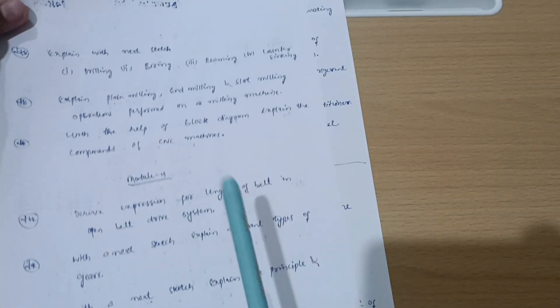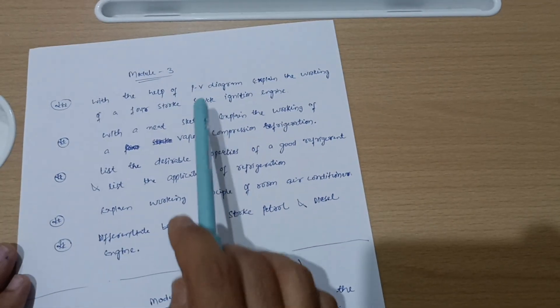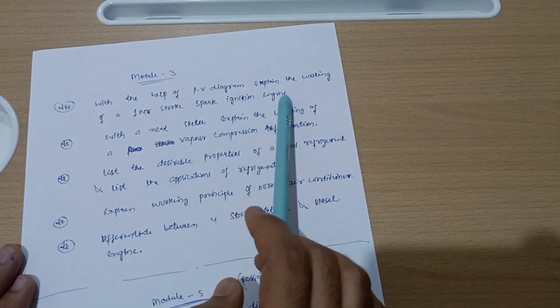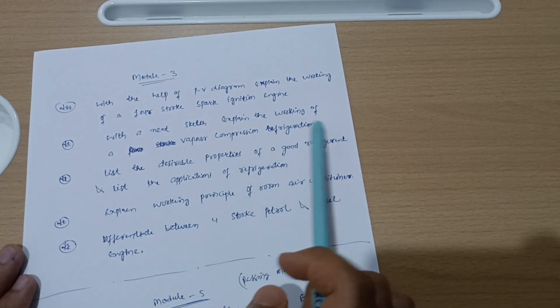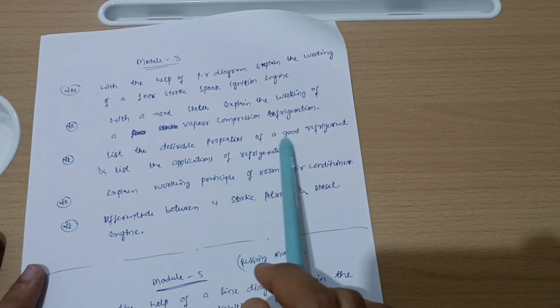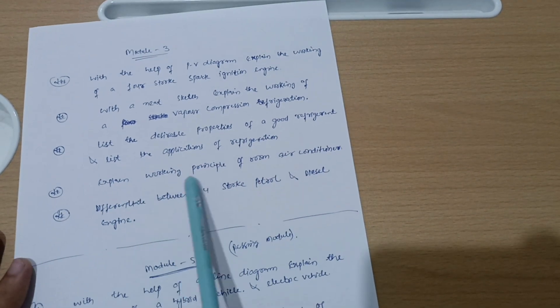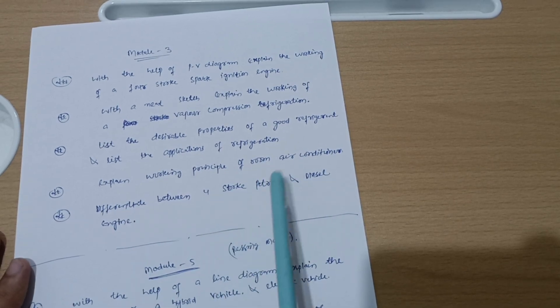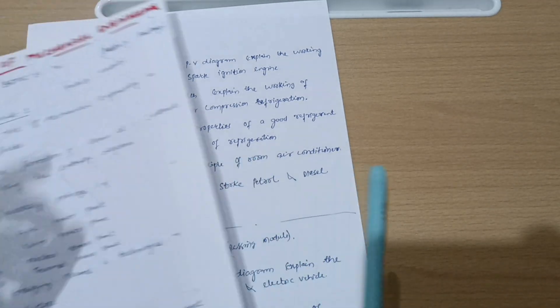Next is module third. With the help of a PV diagram explain the working of four-stroke spark ignition engine. With a neat sketch explain the working of a vapor compression refrigeration. List the desirable properties of a good refrigerant and list the applications of refrigeration. Next, the working principle of room air conditioner and differentiate between four-stroke petrol and diesel engine. This much content is enough to pass the elements of mechanical engineering.